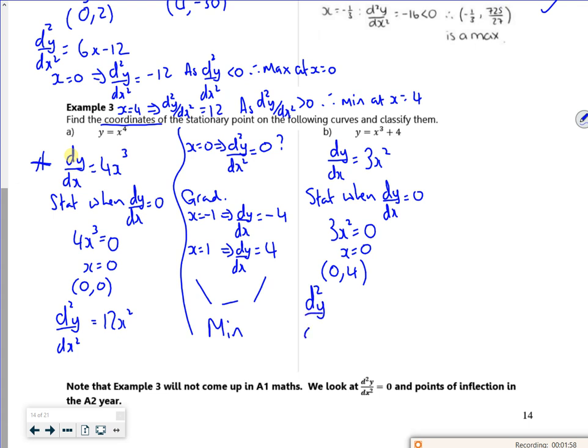So now if I differentiate it again, it gives me 6x. If I put x is 0 in, d2y by dx squared is 0, and I'm not quite sure what's going on. So I want to check the gradient on either side of it.